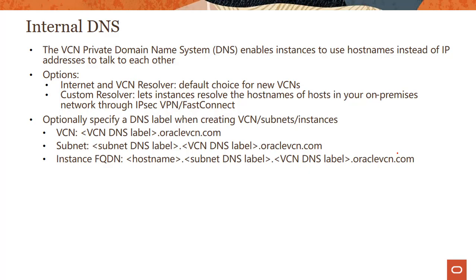When you create a VCN, a subnet, or an instance, you can specify a DNS label. If you don't specify one, it is created for you. For a VCN, there is the vcn-dnslabel.oraclevcn.com format — you cannot delete this part, it always stays, but you can change it. For a subnet, you have similar options — you can decide what the subnet DNS label looks like, and the VCN DNS label is appended because the subnet is part of a VCN.